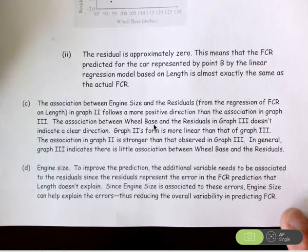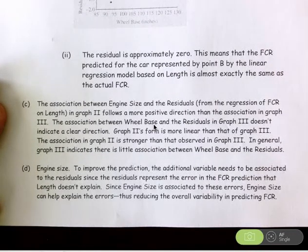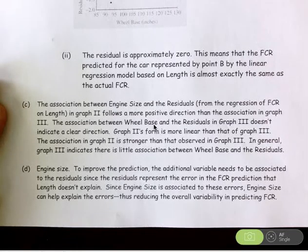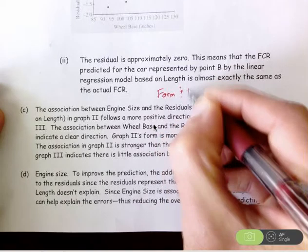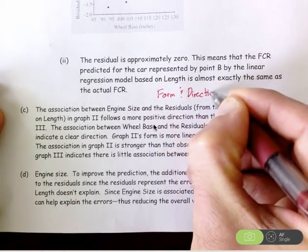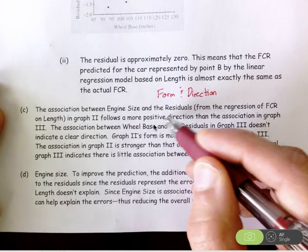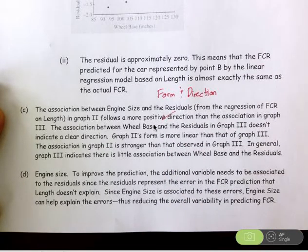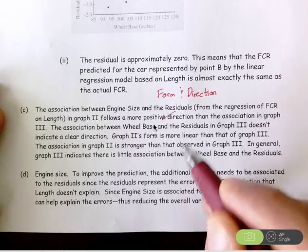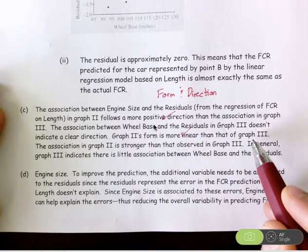Part C is where you were comparing the associations in the two graphs. Your comparisons for the first component had to include a description of form and direction — those were combined together as one component. In my answer, I'm talking about a positive direction in graph number two versus not much of a direction in graph number three, and a linear form in graph number two versus not much of a form in graph number three.